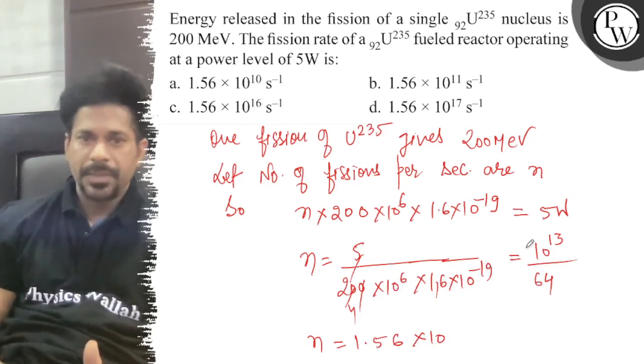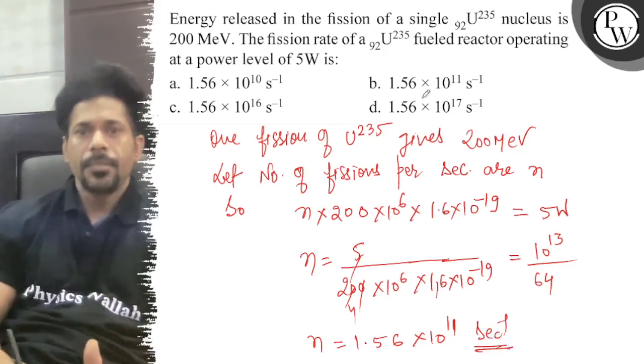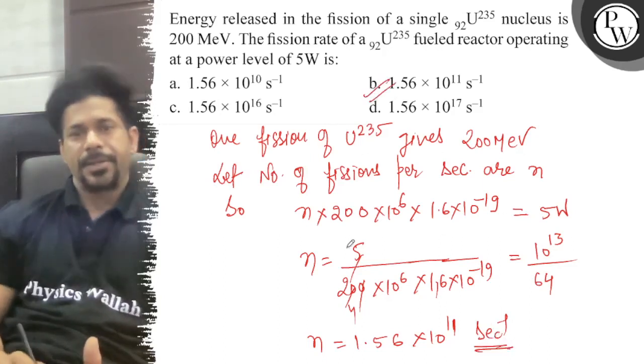and this was 200, so from 200 to 1.6, 20, 5, say 24 times 64, we will take 100. Then it will be 1.56 times 10 to the 11 per second. That is the right answer, so the option is correct. All the best.